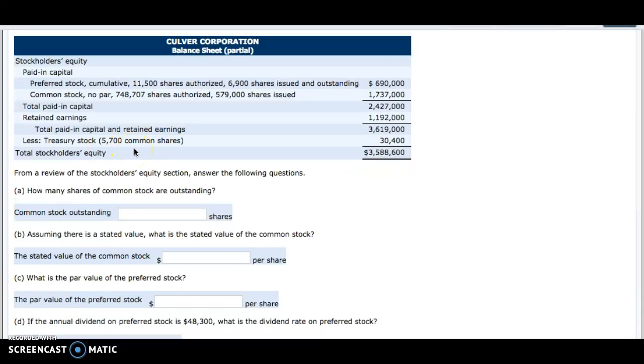To calculate how many outstanding shares we have, we just take the total shares issued less the common shares in treasury stock, which gives us 573,300 shares outstanding.